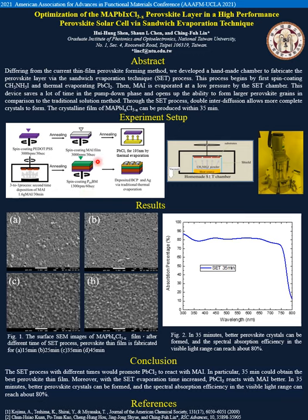Through the SET process, double interdiffusion occurs more completely, allowing the crystal to form. The crystalline film of MAPbIxCl3-x can be produced within 35 minutes.